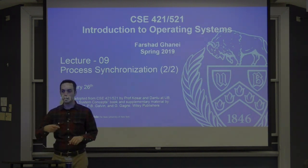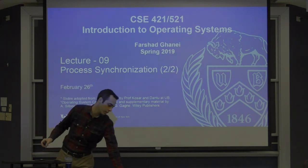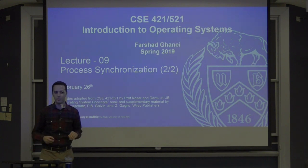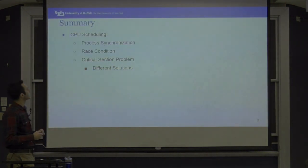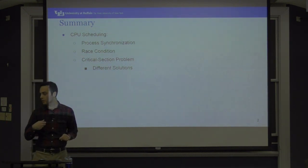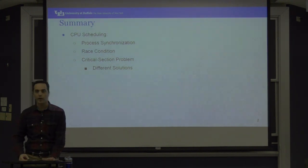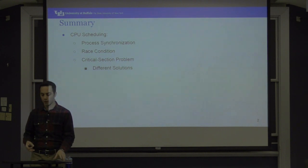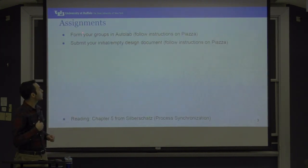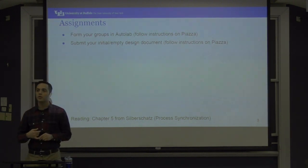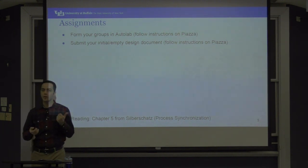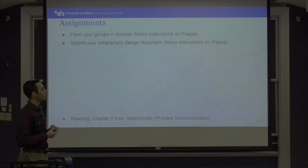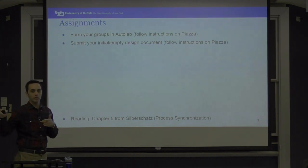That's why homework two has a deadline of March 12th. After these lectures are done, make sure you understand all of them. This is a summary of what we did in process synchronization, race condition, and the critical section problem. We covered a few solutions to this problem with their shortcomings and how we figure out what is a good way to implement them. You should have already formed your groups on Autolab and Autograder.